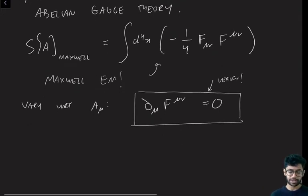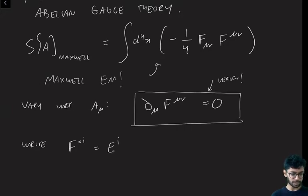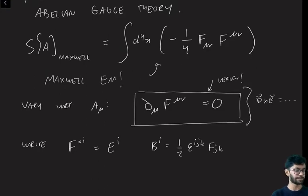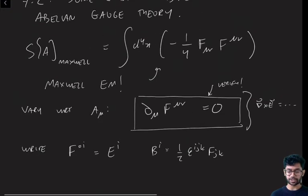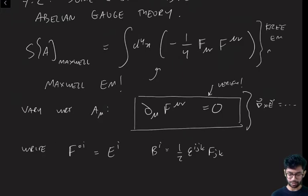In particular, to make these look more familiar, what you should do is write, so first pick a time direction, call that direction zero, and then call F_0i the electric field, and call the magnetic field half times epsilon_ijk F_jk. And then if you work out what these equations are in components, these become the familiar ugly form of Maxwell's equations: curl of E is blah blah blah, and so on. So this is just the Lagrangian describing what we call free electrodynamics, so free E and M, with no matter.